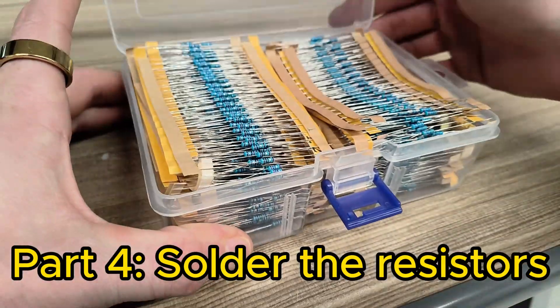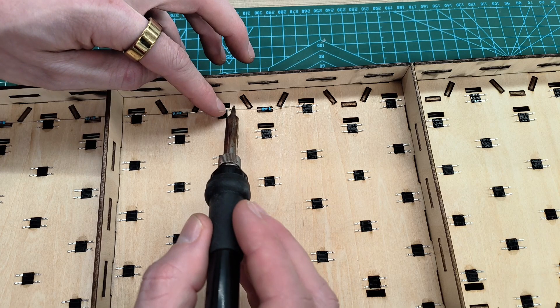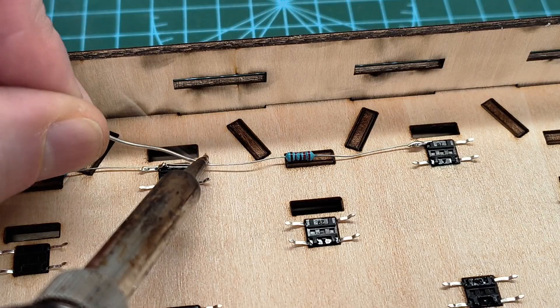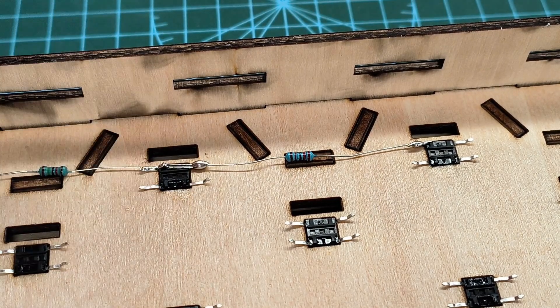Now we can solder on our resistors for our buttons. And I have this nifty design using a matrix scheme where we just have to put a row of resistors and use the analog read. And it's going to be using rows and columns to determine which button is pushed.